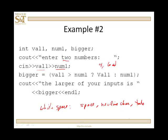So I read in two values, and I'm going to set bigger to be the larger of the two. I could do it with an if statement, but I'll do it with a ternary: is val_one greater than num_one? If it is, return val_one; otherwise, return num_one. So bigger gets assigned the larger of the two values. It doesn't really matter where I put the equality — if they're equal, it doesn't matter which one is assigned to bigger. Then I output: 'The larger of your inputs is bigger.'